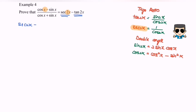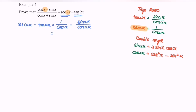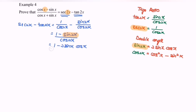So sec 2x minus tan 2x equals 1/cos 2x minus sin 2x/cos 2x. The denominators are the same, so we combine them to get (1 - sin 2x) / cos 2x. Now, sin 2x by the double angle formula equals 2 sin x cos x, giving us (1 - 2 sin x cos x) / cos 2x.